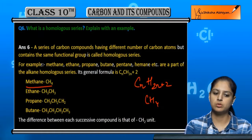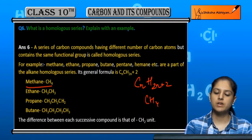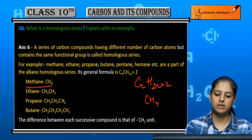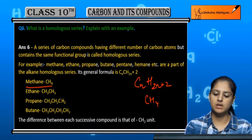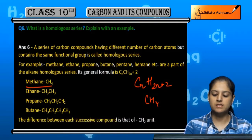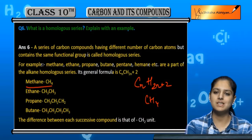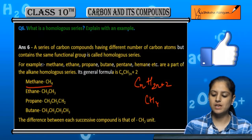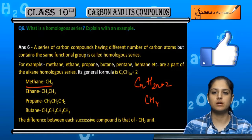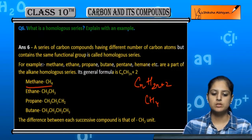What you will notice is the difference between each successive compound in a homologous series is one CH2 unit, which has a molecular mass difference of 14.